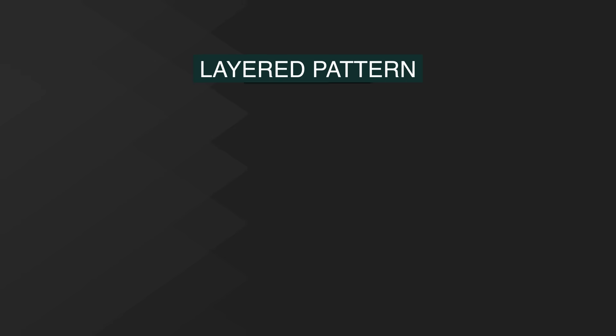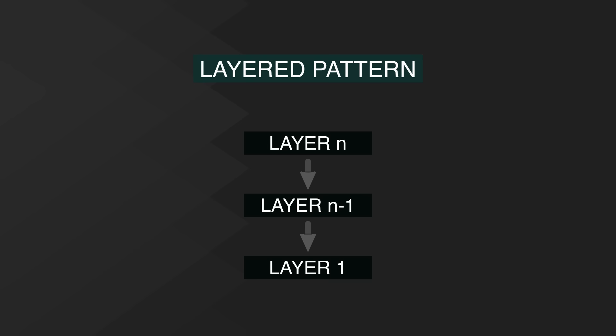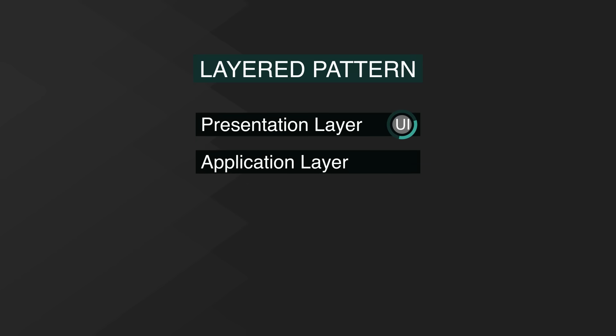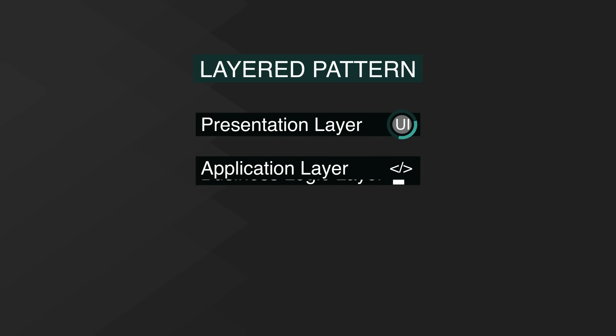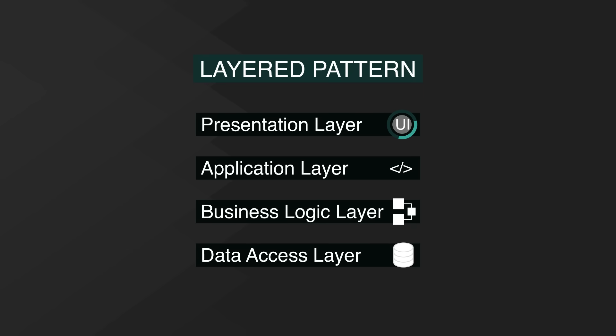Pattern 1: Layered Pattern. This is the most common architecture pattern, also known as the N-tier architecture. Here, the software is divided into units called layers. There are usually four tiers of layers: Presentation layer, Application layer, Business logic layer, and Data access layer.